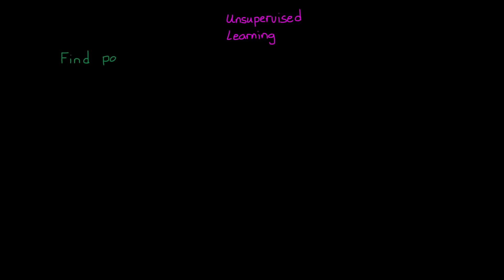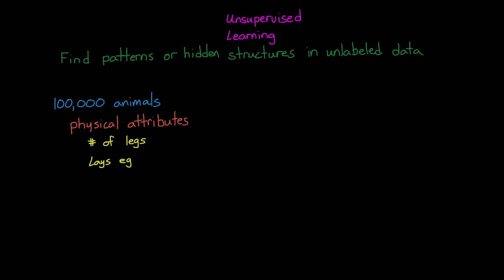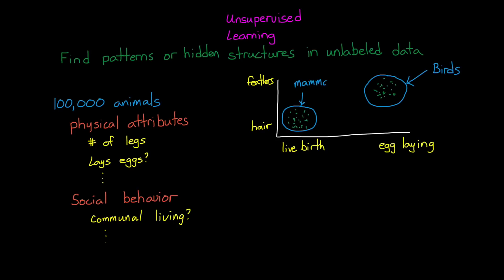Unsupervised learning is used to find patterns or hidden structures and data sets that have not been categorized or labeled. For example, imagine you collected information on 100,000 animals, like a bunch of physical attributes and social tendencies. Then you could use unsupervised learning to group the animals, or cluster them into similar features. This could be something obvious like grouping them into mammals and birds. Or to group them by patterns that might not be as obvious, like finding correlations between physical traits and social behaviors that you didn't know about ahead of time.